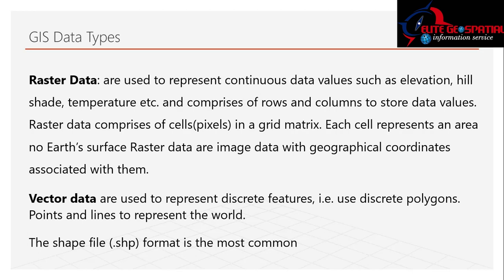Different data types are used in GIS. Raster data is used to represent continuous data values such as elevation, hillshade, and temperature. It comprises rows and columns to store data values — cells or pixels in a grid matrix, where each cell represents an area. Raster surface data are image data with geographical coordinates associated with them.